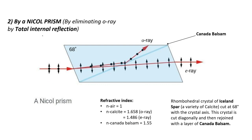The second method is by a Nicol Prism. The technique used here is eliminating the O-ray, or the ordinary ray, by total internal reflection.